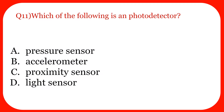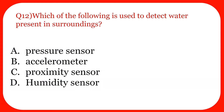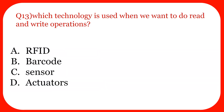Question eleven: Which of the following is a photo detector — pressure sensor, accelerometer, proximity sensor, or light sensor? The answer is option D, light sensor. Question twelve: Which of the following is used to detect water present in the surroundings — pressure sensor, accelerometer, proximity sensor, or humidity sensor? The answer is option D, humidity sensor. It is straightforward — you use a humidity sensor if you want to detect the presence of water in the environment.